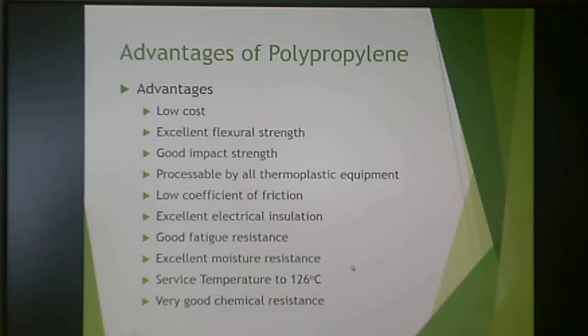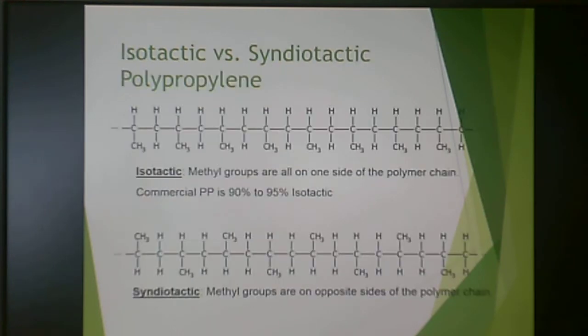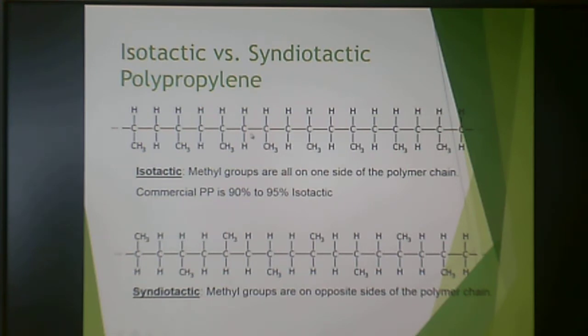In isotactic polypropylene, all methyl groups are on one side. In atactic polypropylene, there is no particular prediction of where that methyl group will be based on the methyl group before it.